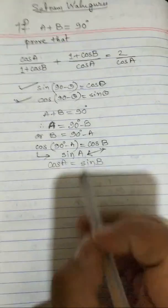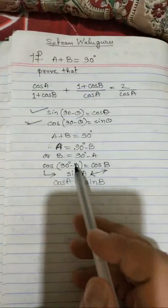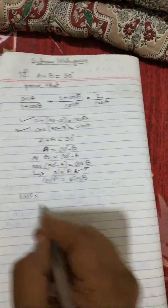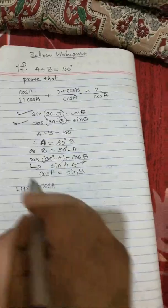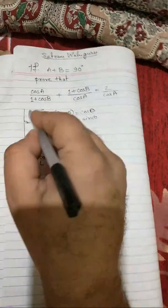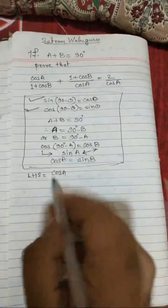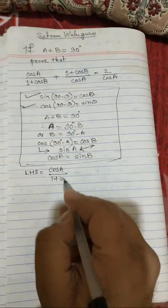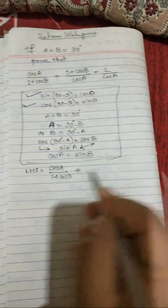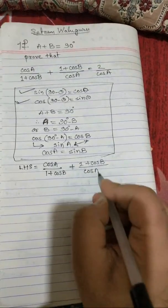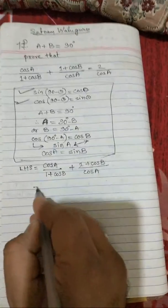This is the basic thing we have to understand before solving this problem. Now let us start solving. LHS is equal to cos a upon 1 plus cos b plus 1 plus cos b upon cos a. This is your LHS.